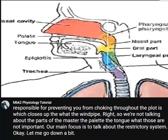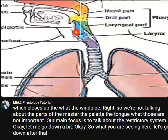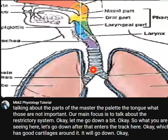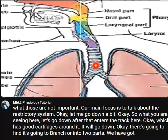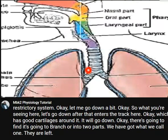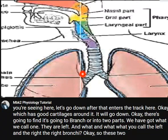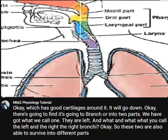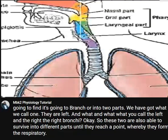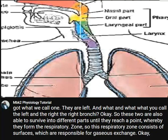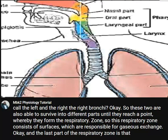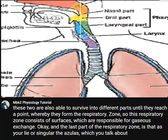After air enters the trachea, which has cartilages around it, it will go down and branch off into two parts: the left bronchus and the right bronchus. These two are able to subdivide into different parts until they reach a point where they form the respiratory zone. This respiratory zone consists of surfaces responsible for gaseous exchange. The last part of the respiratory zone is the alveoli — singular, alveolus — which we'll talk about in detail later.